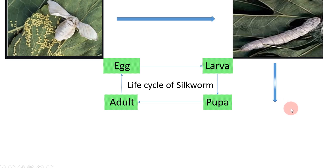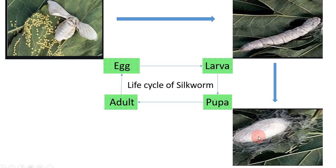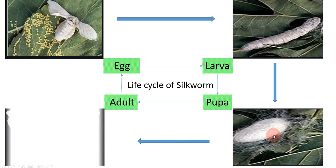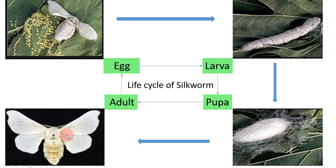After the larva stage comes the pupa stage. The pupa of silkworm is known as a cocoon. At the end of the larva stage, when the larva produces silk fiber and encloses itself within that silk fiber, it forms a cocoon. After the pupa stage, we have an adult silk moth. When the adult silk moth becomes matured, it lays eggs and another life cycle starts.